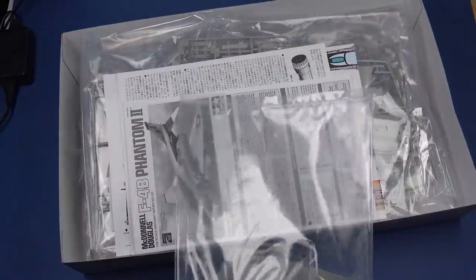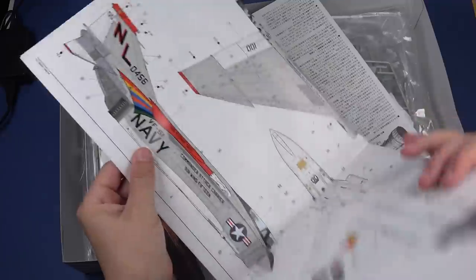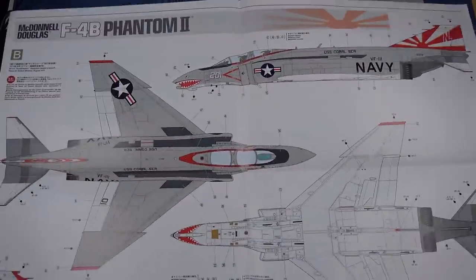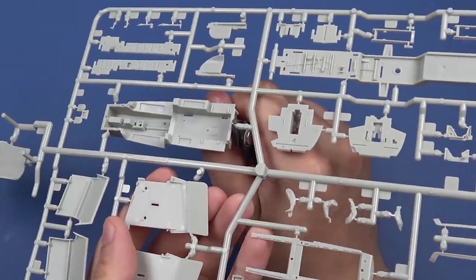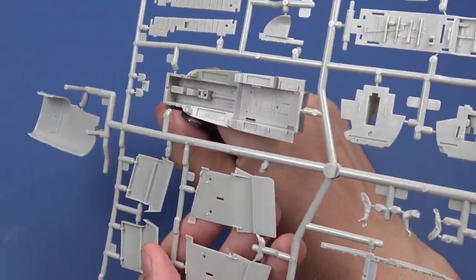Here is the new Tamiya F4B in 48 scale. There are many review videos of this kit on YouTube, so I won't waste your time showing what's inside the box. Let's get started. The first job is to cut the necessary parts from the spruce and clean them neatly.